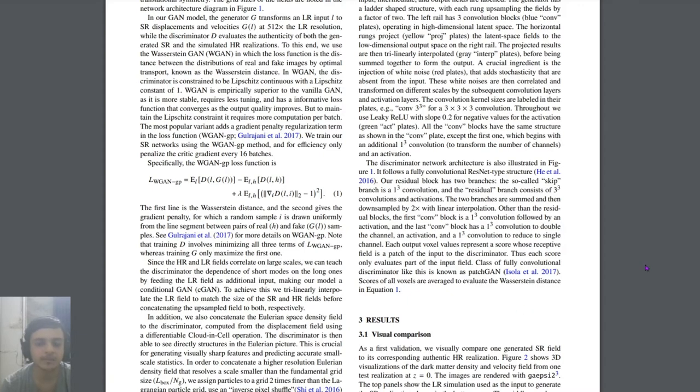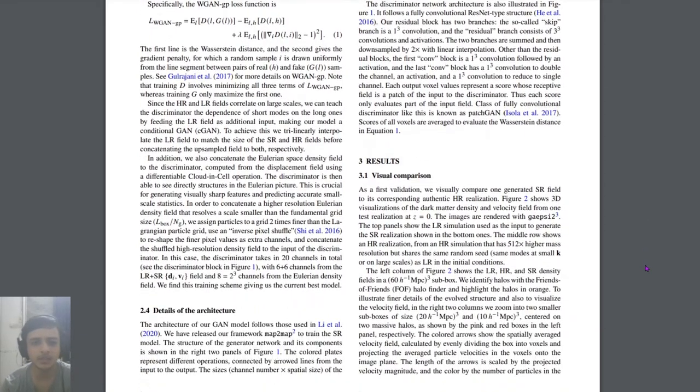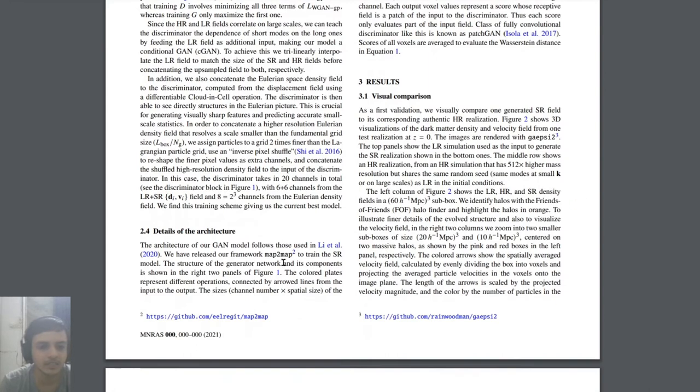Let's jump into the results because we don't want to go that much into the GAN. This is the paper which was released last year by D, and it uses map to map to train. I think the previous paper I covered on this channel also had a similar kind of code.